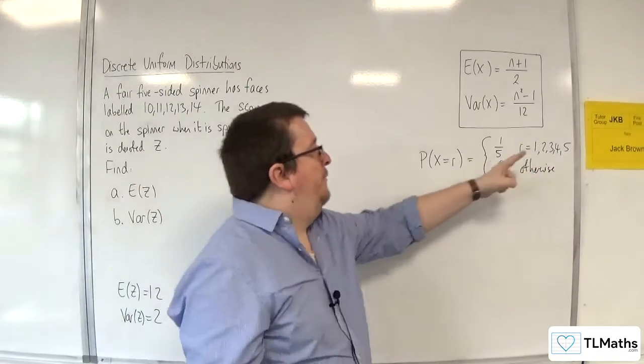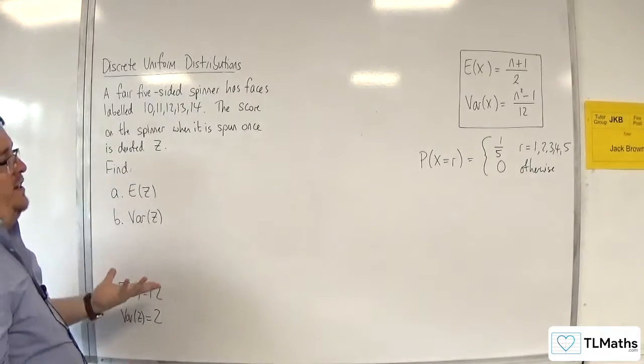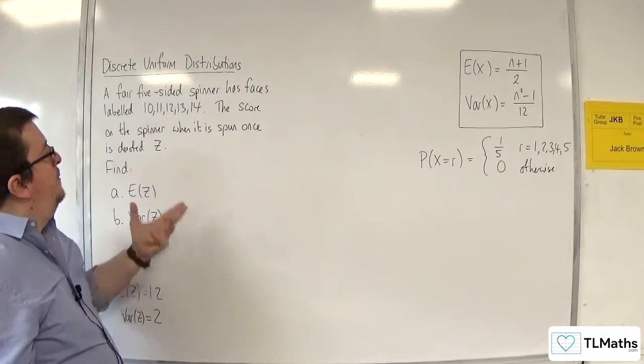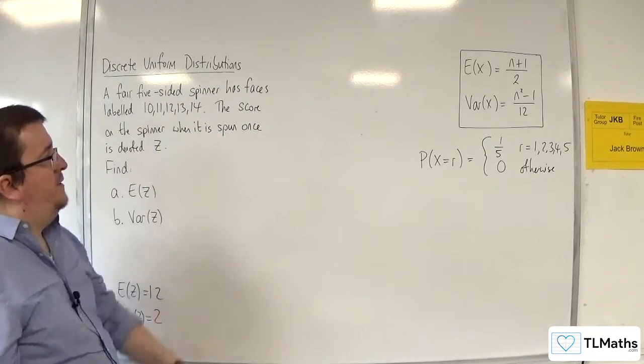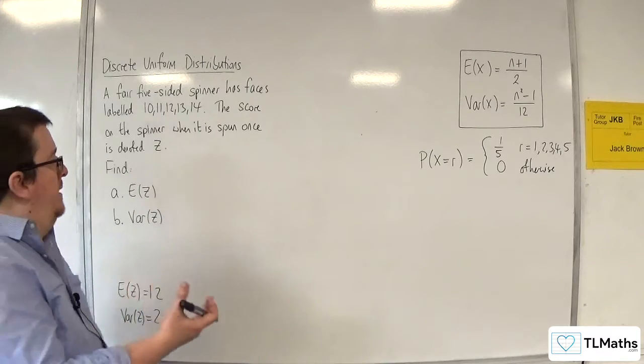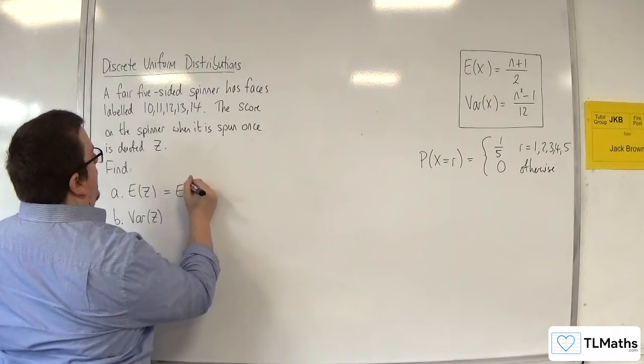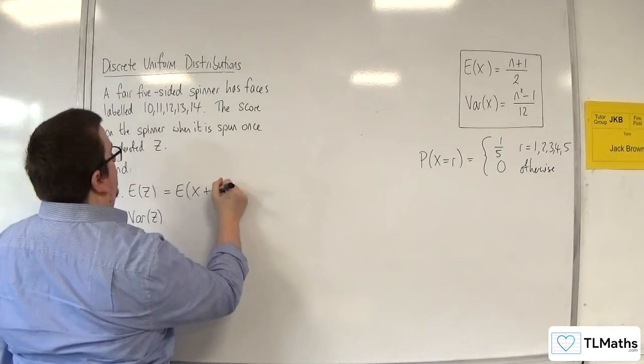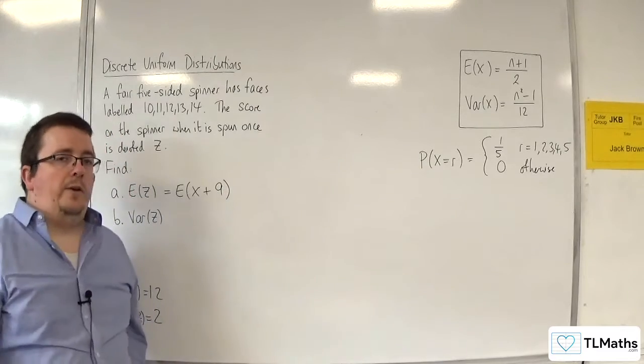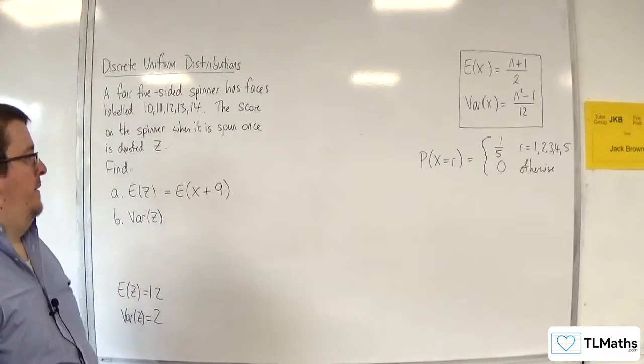So because they're going from 1 up to 5, what I need to do is add 9 to each of them, and then I get to 10, 11, 12, 13, 14. So really, z is the same thing as x plus 9, adding 9 to each of the r values.